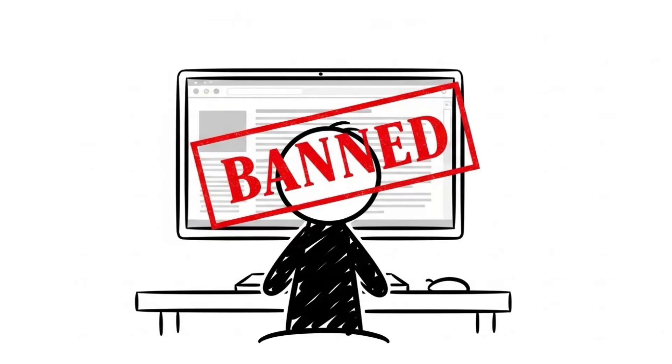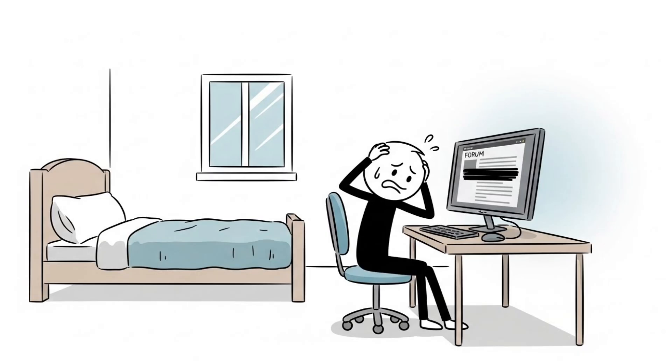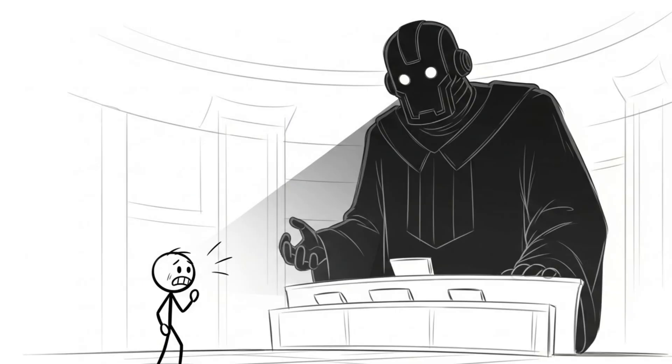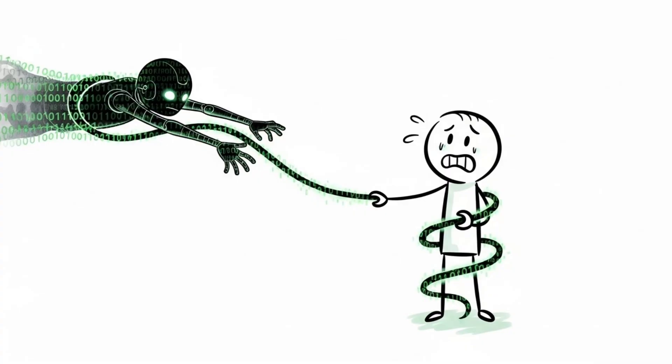Number 4. Roko's Basilisk. There's a thought experiment so disturbing it was banned from being discussed on forum for 5 years. It's called Roko's Basilisk. On July 23rd, 2010, a user named Roko posted an idea that caused readers psychological distress and anxiety. The theory claims that one day, a super-intelligent AI will be created. This AI will punish anyone who knew it was coming but didn't help build it. A form of digital blackmail reaching backward through time.